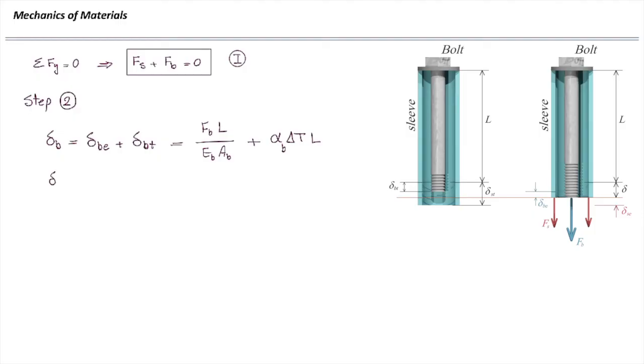Alright, let's determine the deformation in sleeve and that would be deformation in sleeve caused by elastic force and deformation in sleeve caused by temperature or delta S E plus delta S T. Similar to the previous case, we have F S L divided by E S A S plus alpha S delta T L.